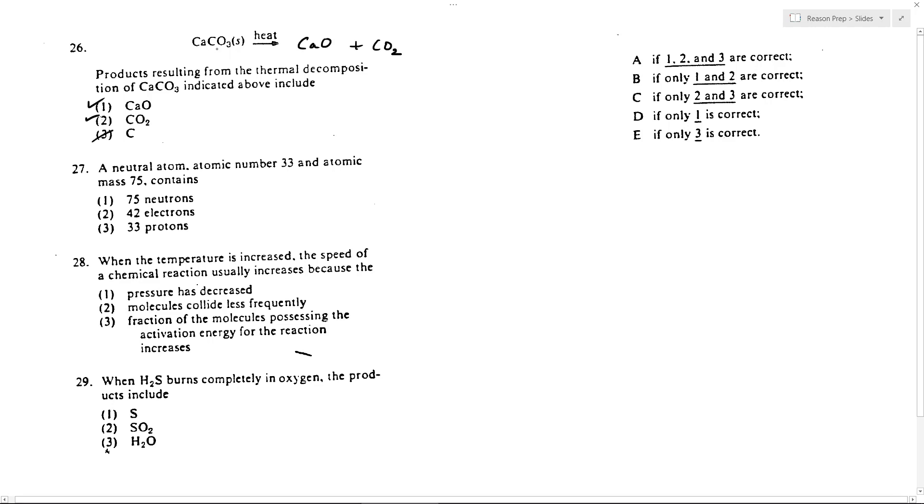You'll never just get pure carbon out of this kind of decomposition. The carbon is going to go to carbon dioxide. So it's going to be one and two, and according to our little key here, that's going to be choice B.